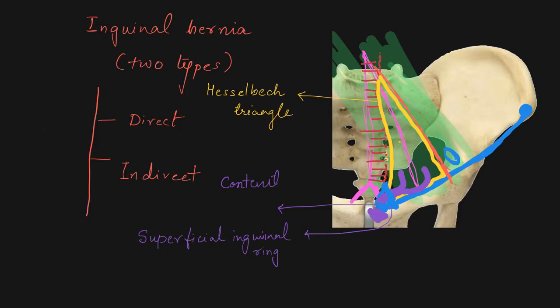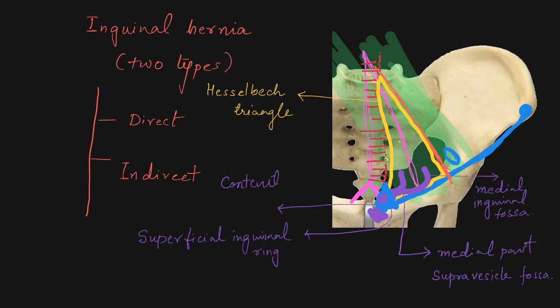We divided Hesselbach's triangle into two medial and lateral parts. When the content is protruded through the supravesical fossa it is called the medial type of direct inguinal hernia. If it is protruded through the medial inguinal fossa that is called the lateral type of direct inguinal hernia.